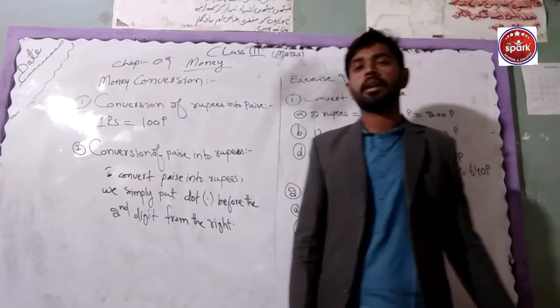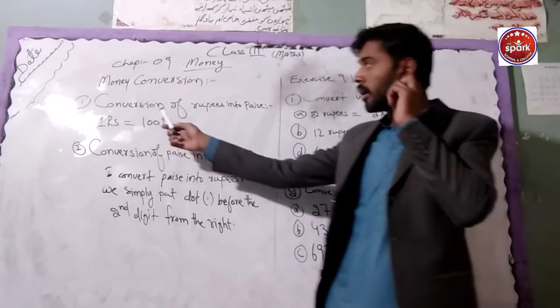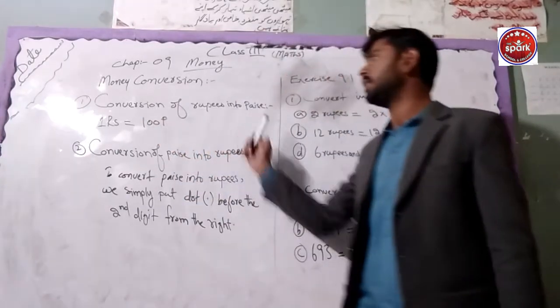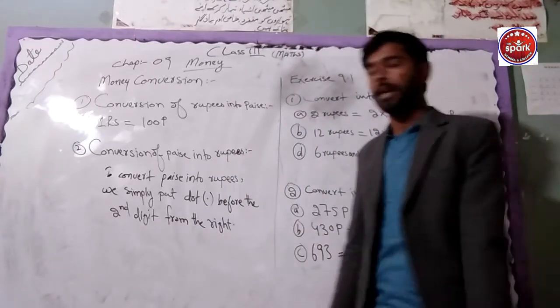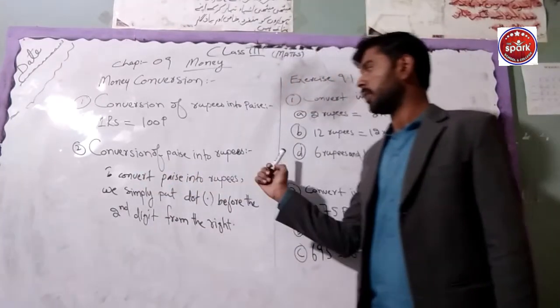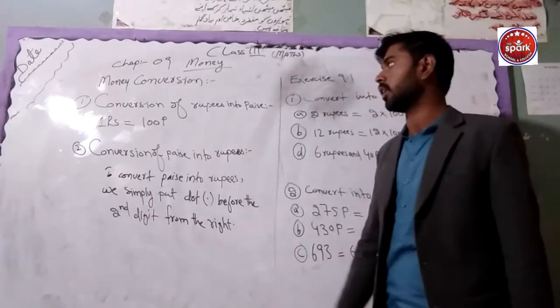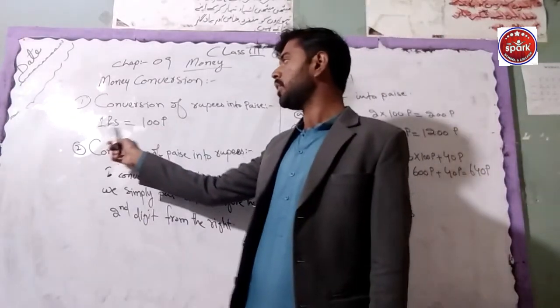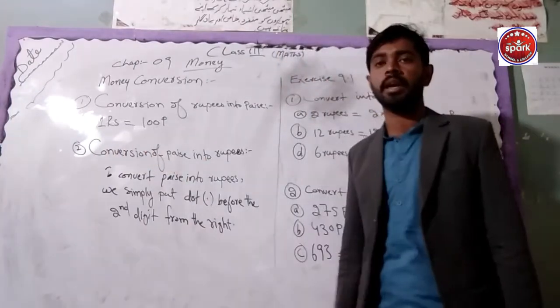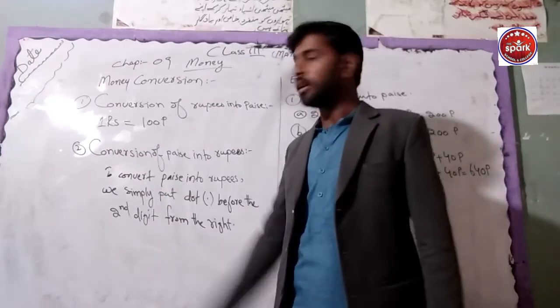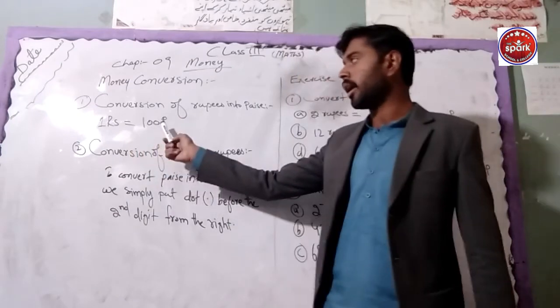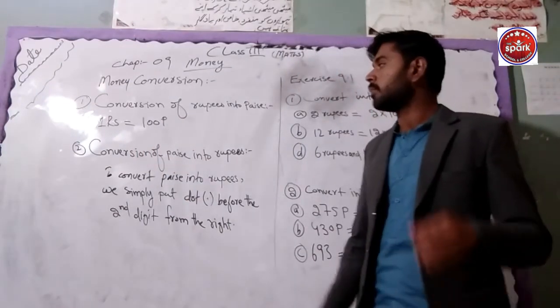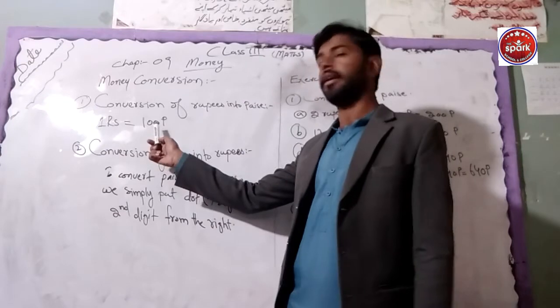How do we try to do money? First of all, we call it conversion of rupees into paise. How do we convert it in paise? And conversion of paise into rupees. And how do we convert it in rupees? Rs. is equal to 100 paise.